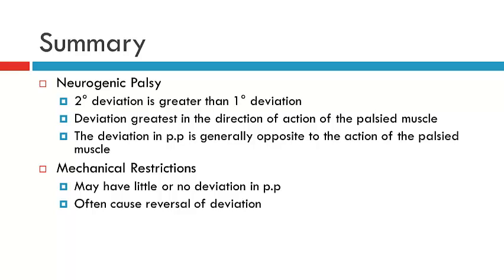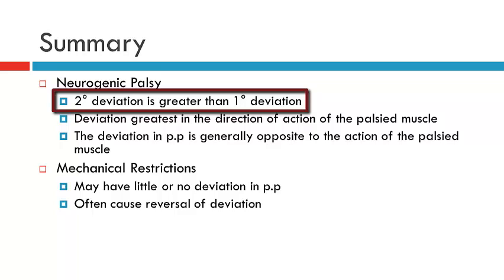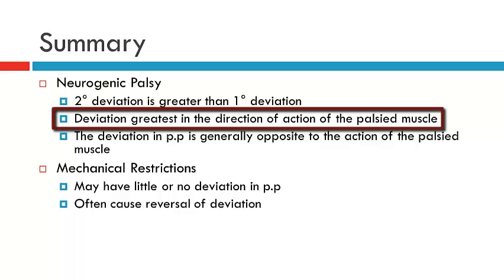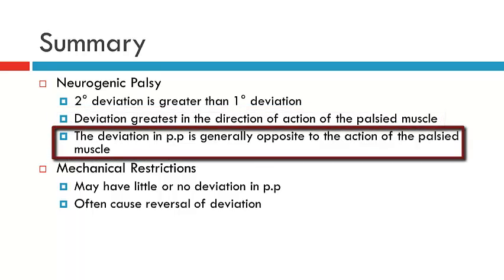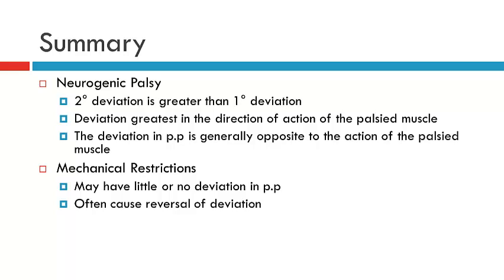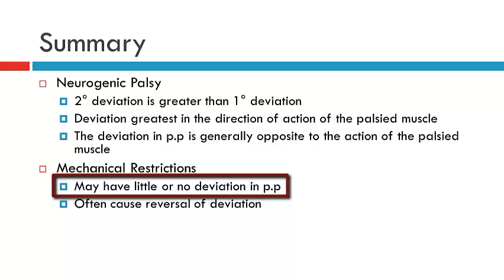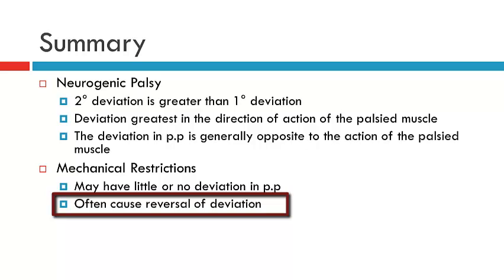In summary, key features of neurogenic palsies: the secondary deviation will be greater than the primary deviation; the deviation will be greatest in the direction of action of the palsy muscle; and the deviation in primary position is generally opposite to the action of the palsy muscle. For mechanical restrictions, distinguishing features are that there may be very little deviation in primary position with no consistent relationship between the limitation of movement and deviation, and mechanical restrictions are more likely to cause reversal of the deviation.